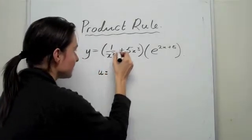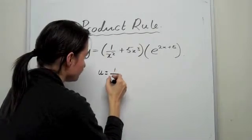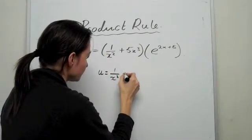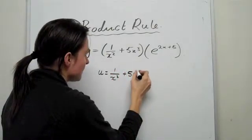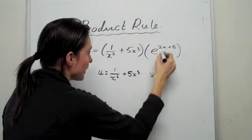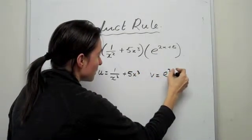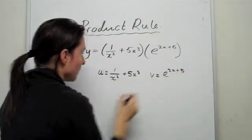Now let's have a look. We're going to split it up. We're going to say U is, let U be equal to this whole thing. And let V equal to the other part of the product.